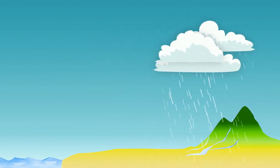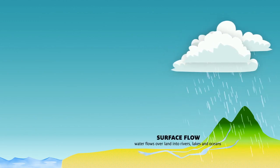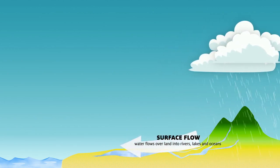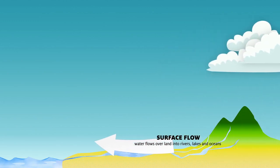On the ground, liquid water from rain or melted snow flows down over the surface of the land into rivers, lakes, and oceans.